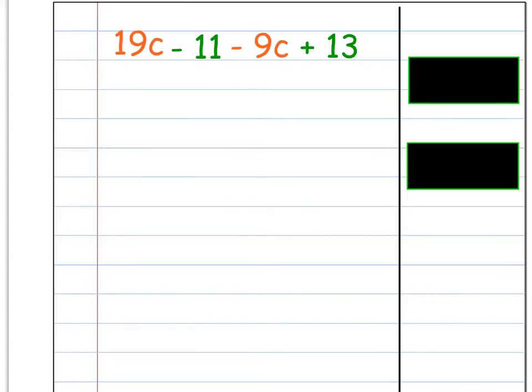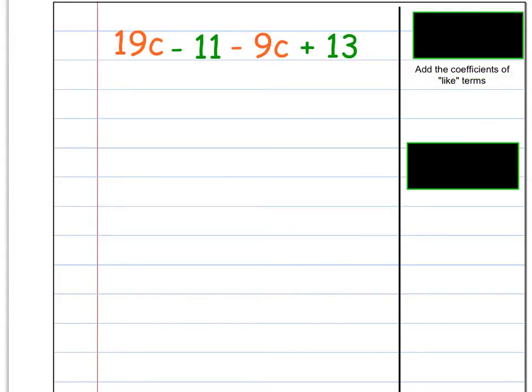So here's our first example. You can see this one, I do have it color coded, and the numbers that have the C behind them, so the 19C and the negative 9C, those are like terms because they both have a C. The other numbers that are in green, those are whole numbers. Those don't have a C, so those can be combined together. So when you are combining like terms, you have to make sure to add the coefficients of the like terms.